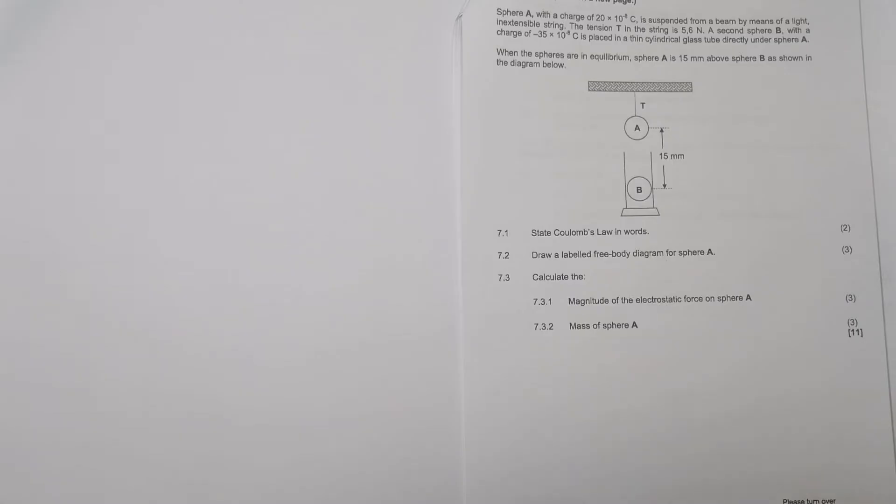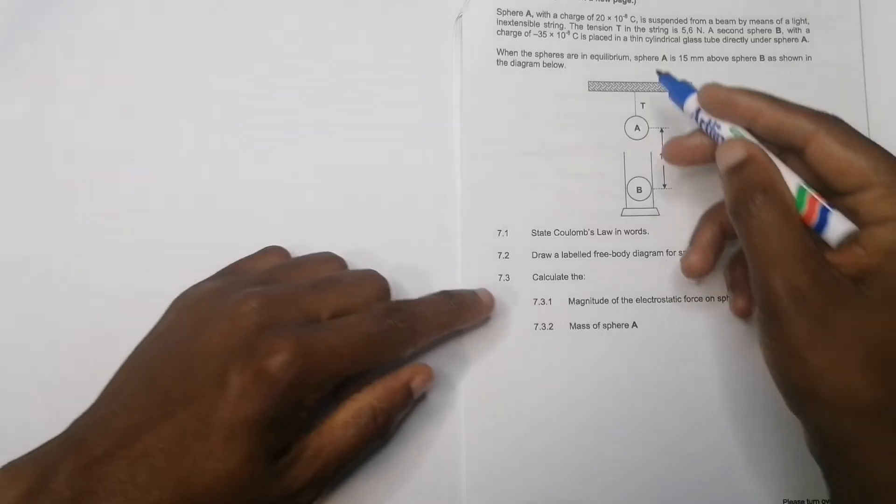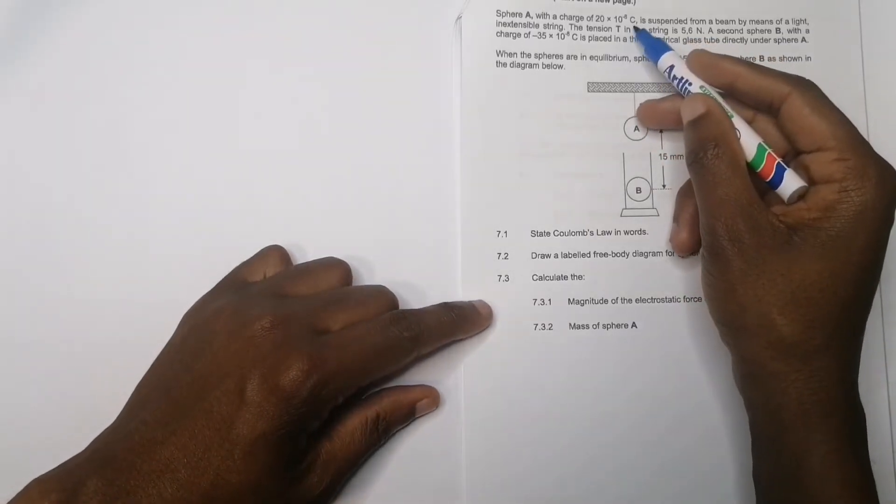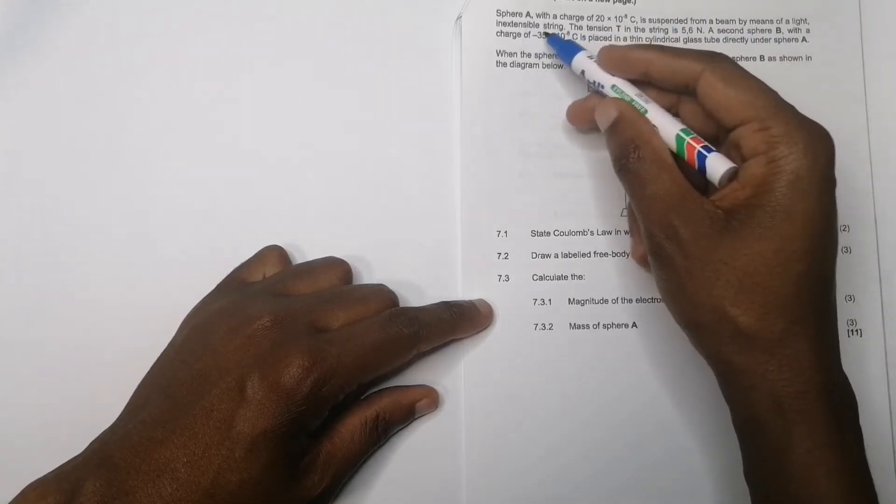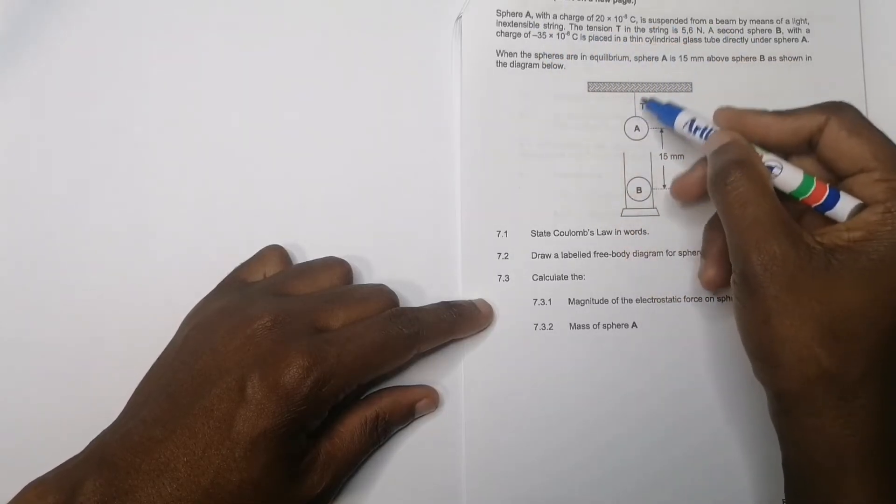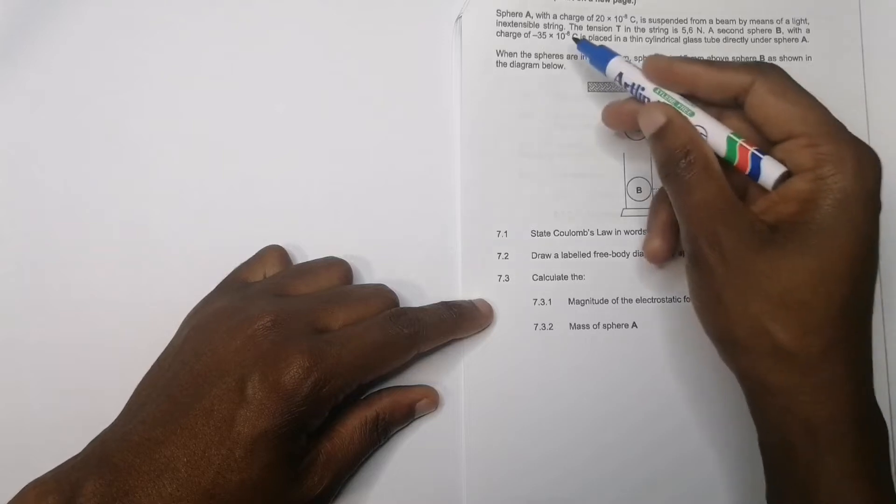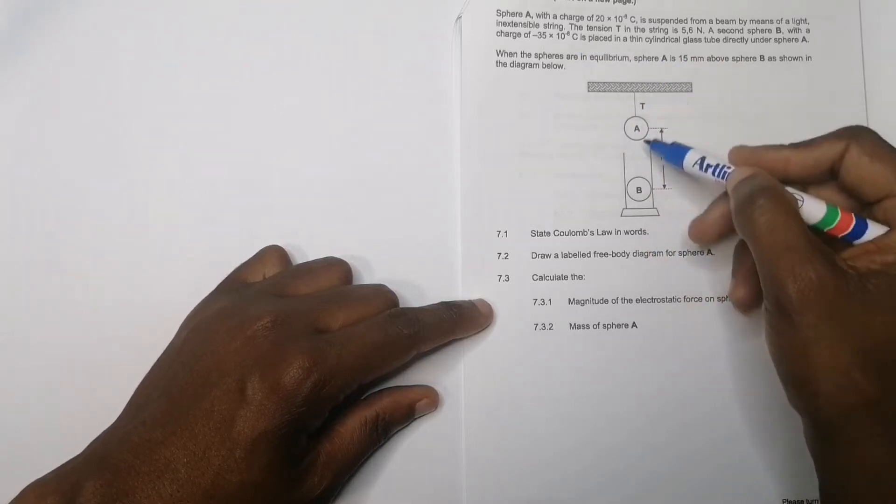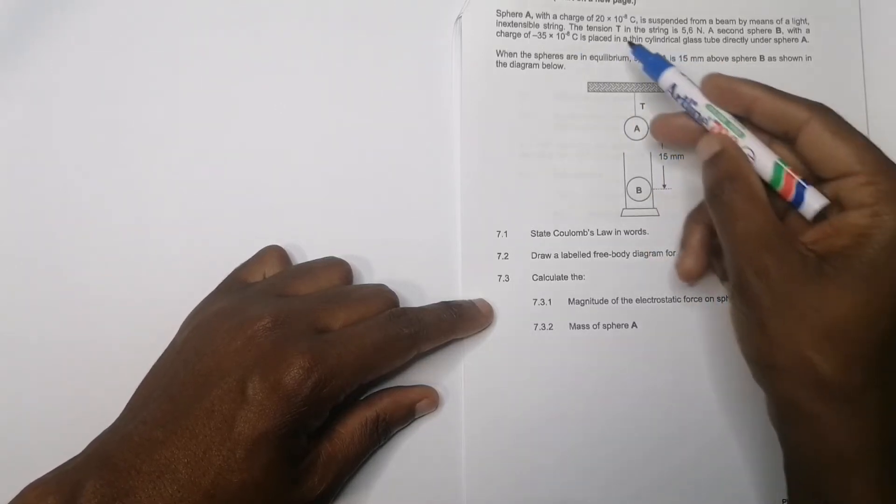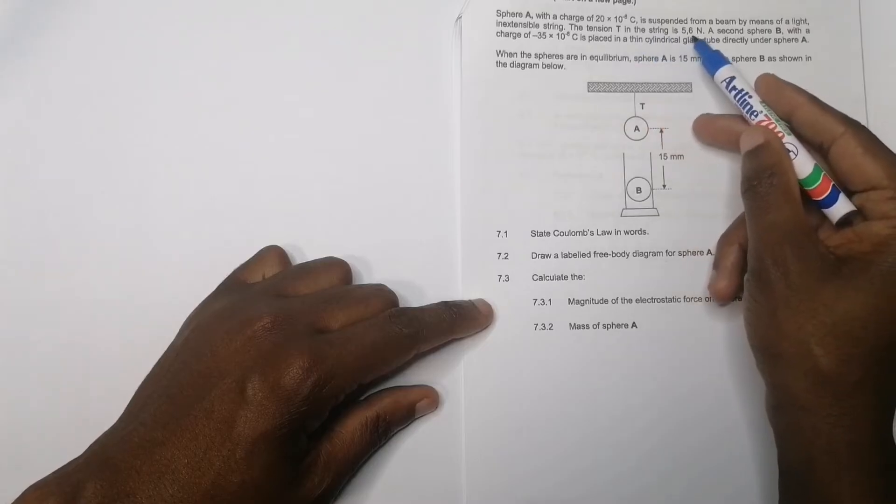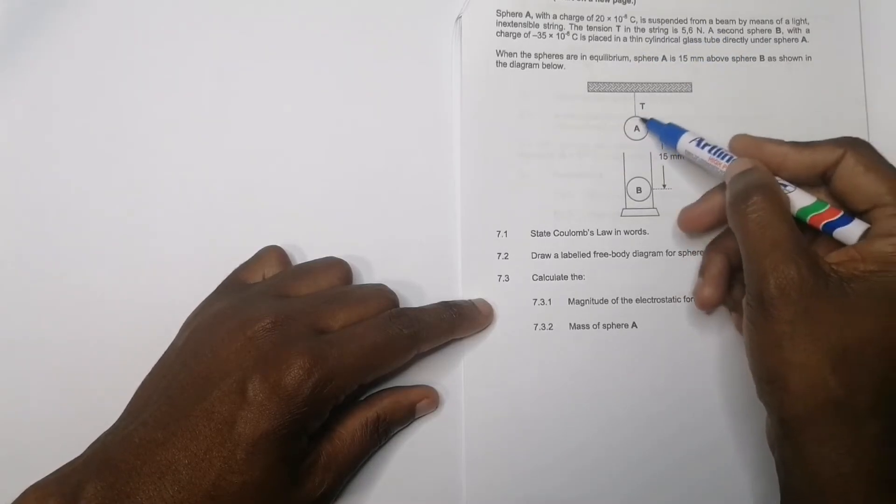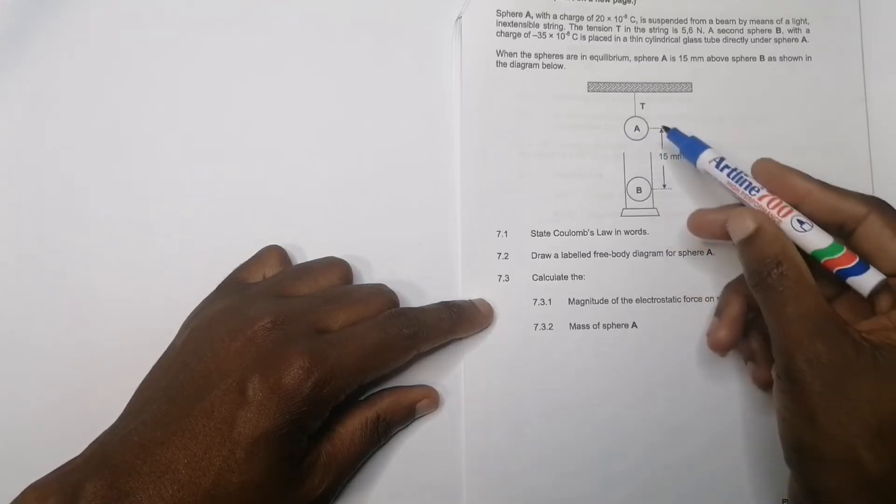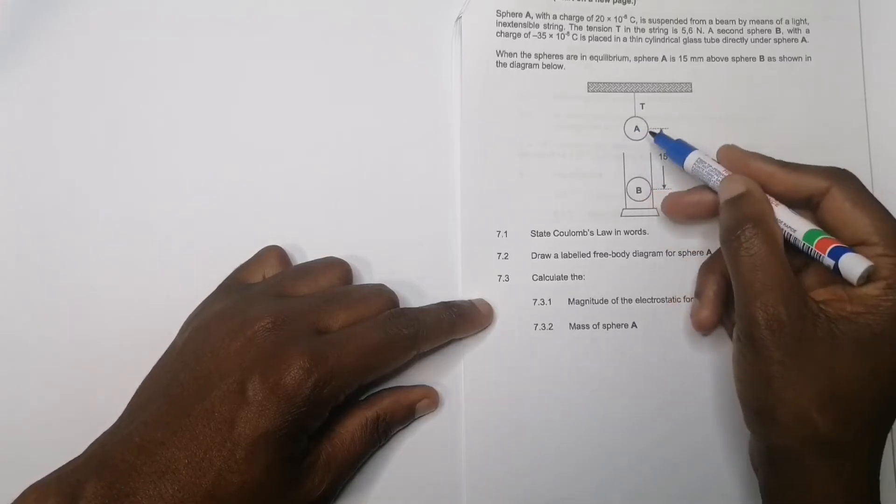Let's get into question seven. We're given sphere A with a charge of 20 times 10 minus 8 coulombs, suspended on a beam by means of a light inextensible string, so the string is not elastic. The tension in the string is 5.6 newtons, holding that charge A.